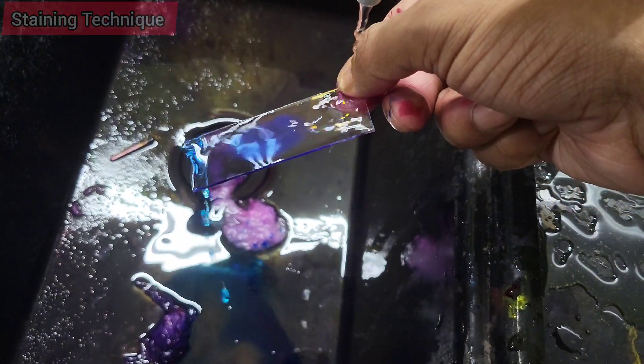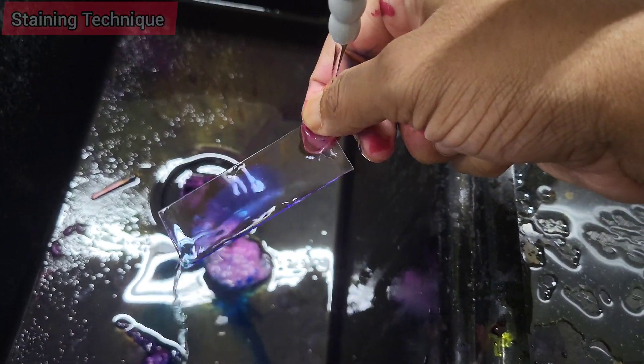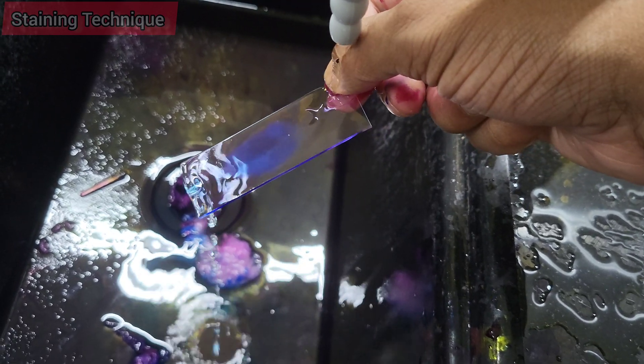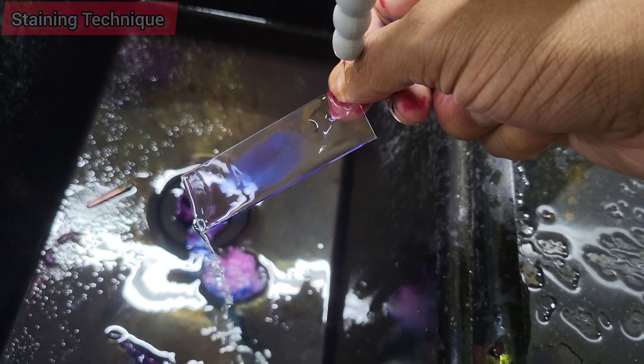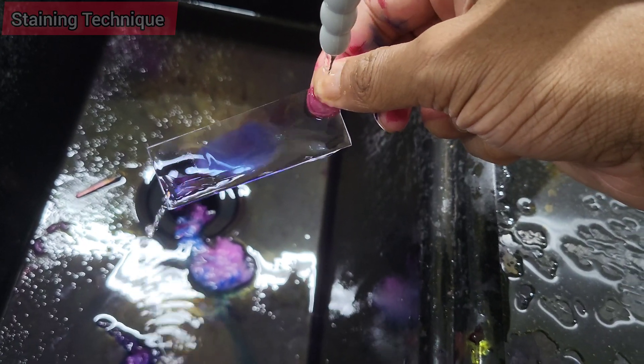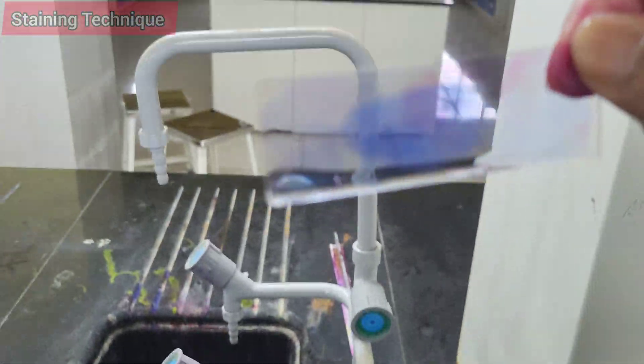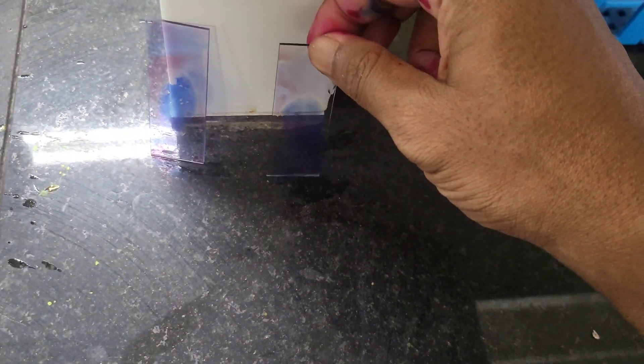After 30 seconds to one minute, rinse the slide gently with tap water and let it air dry and observe under oil immersion lens using a microscope. Acid-fast bacilli appear as brick red or pink color in blue background. Acid-fast bacilli may be sparsely distributed so we have to examine the entire slide.